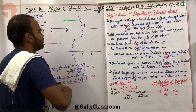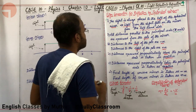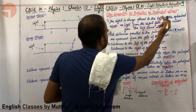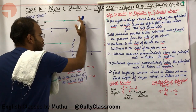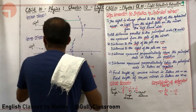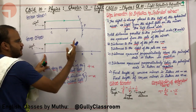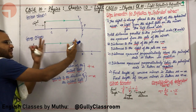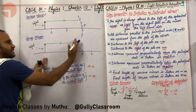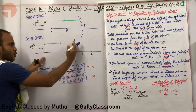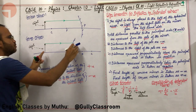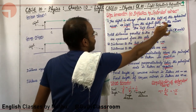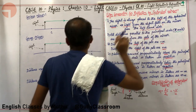The first point: the object is always placed to the left of the spherical mirror. This is the spherical mirror and the object is placed always to the left of it. Light from the object falls on the mirror from the left-hand side.